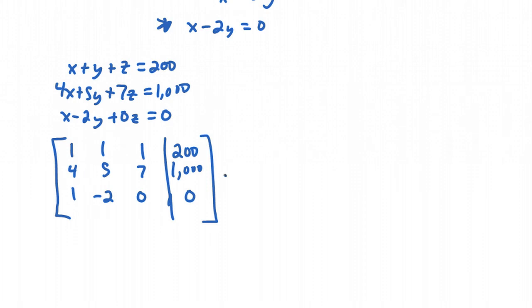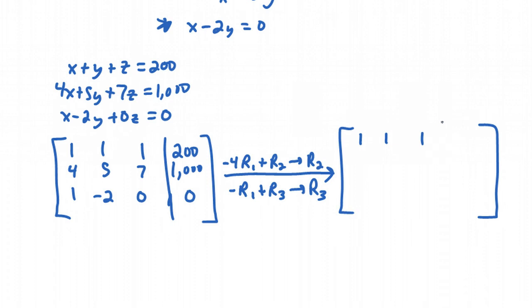Remember our goal is to get 1's along the diagonal and 0's everywhere underneath the diagonal. And then we'll do back substitution. First of all, I want to get a 0 in the place where this 4 is. I'm going to multiply the top row by minus 4 and add it to the second row and give us a new second row. So minus 4 times row 1 plus row 2, that will give us a new row 2. Similarly, in the bottom row, I want this to be a 0. So we're going to do minus 1 times the top row plus the bottom row, row 3. And that will give us a new row 3.